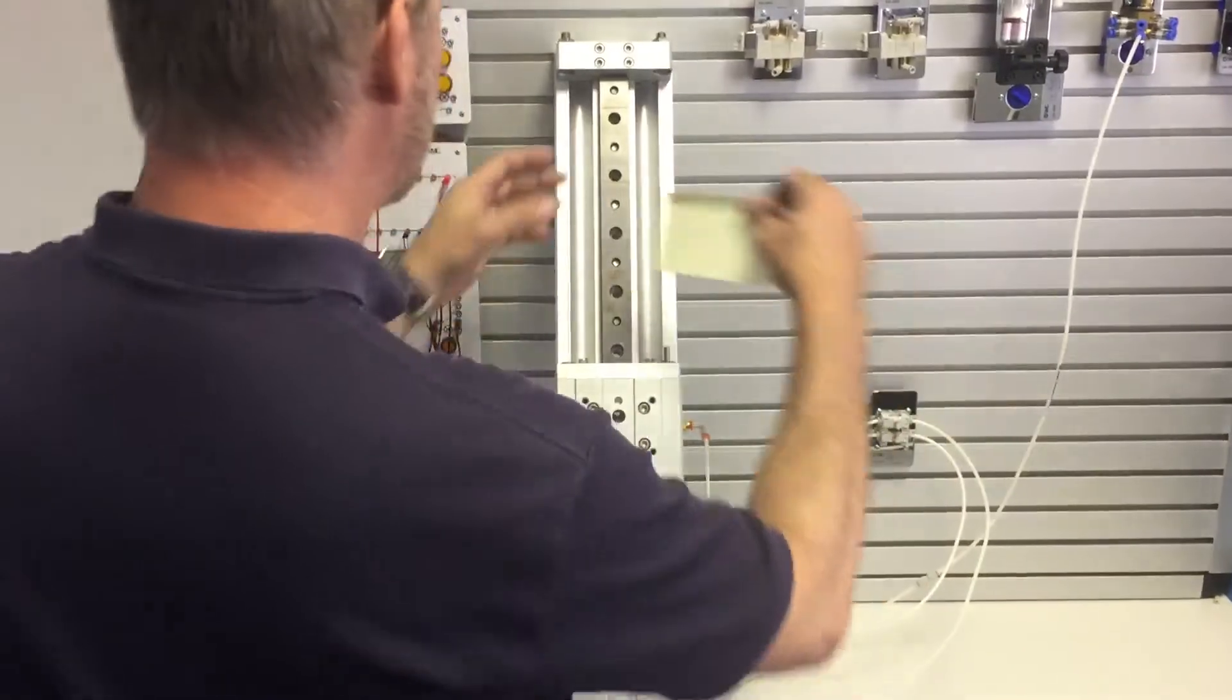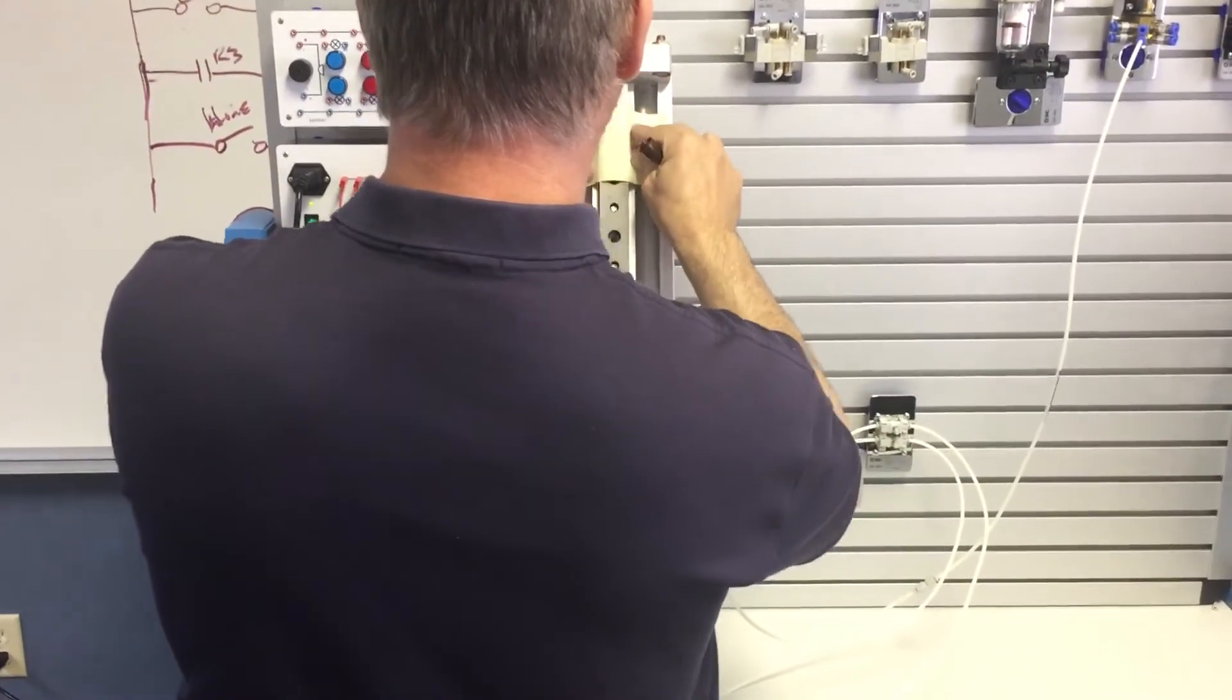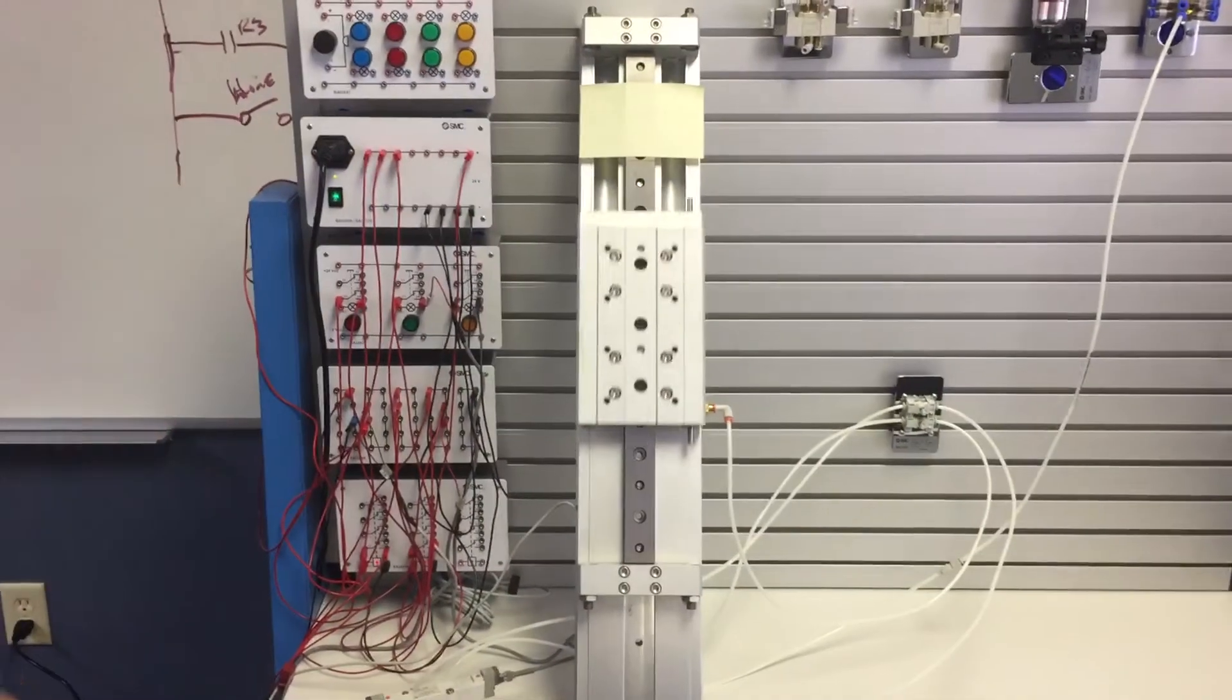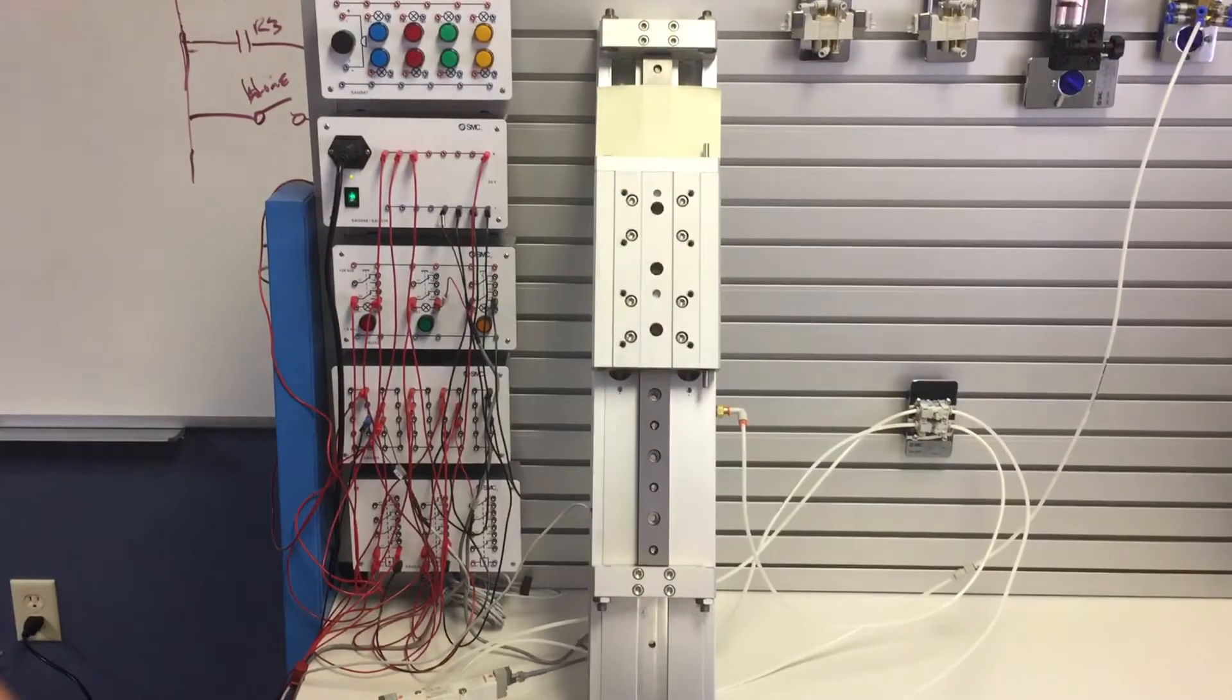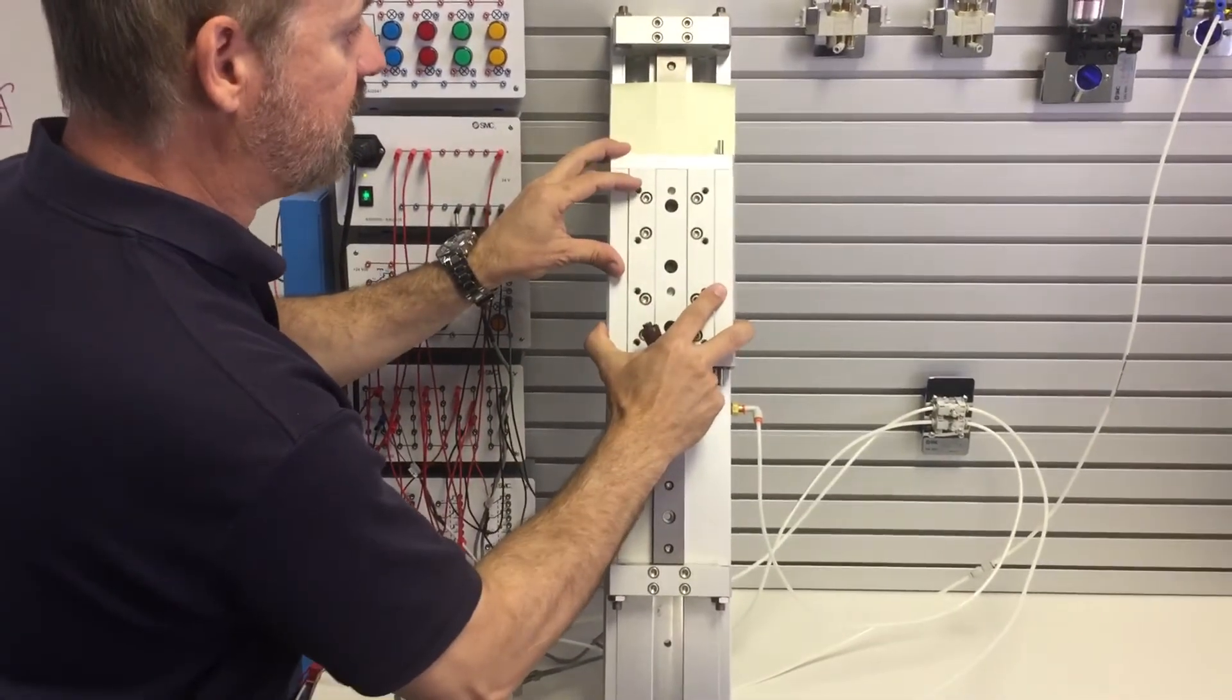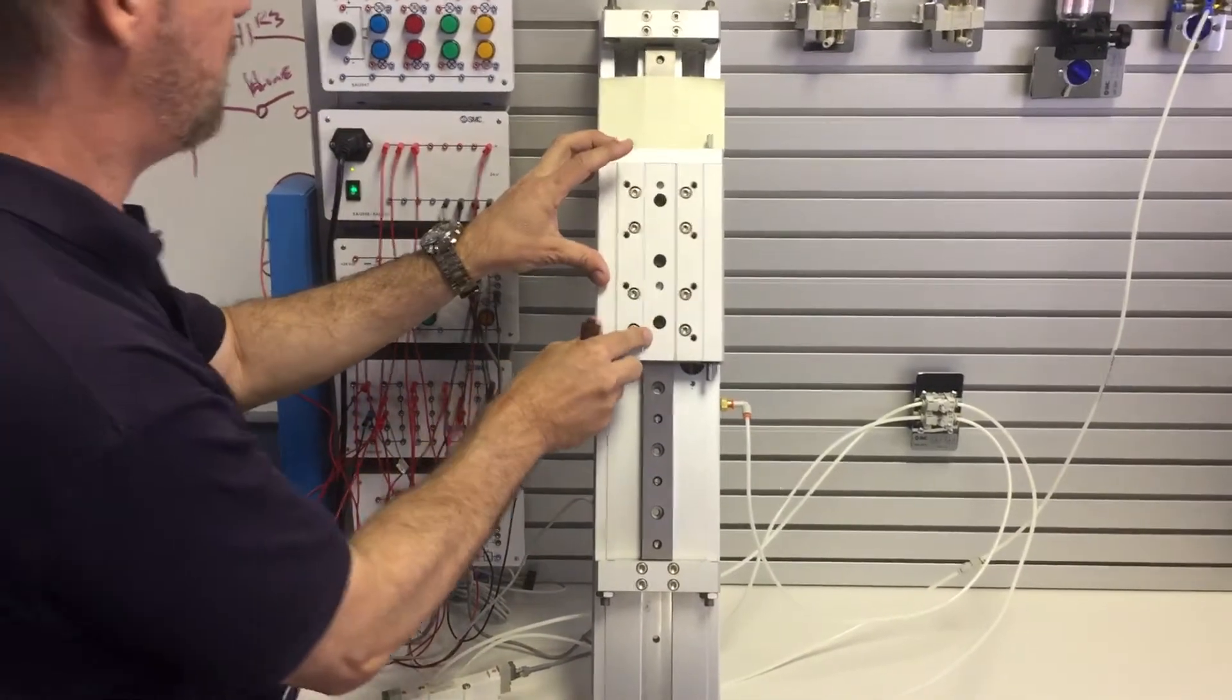I'll cycle this back and forth to better illustrate the repeatability. When it's in position, it's pretty strong. It should be plenty for a five pound load.